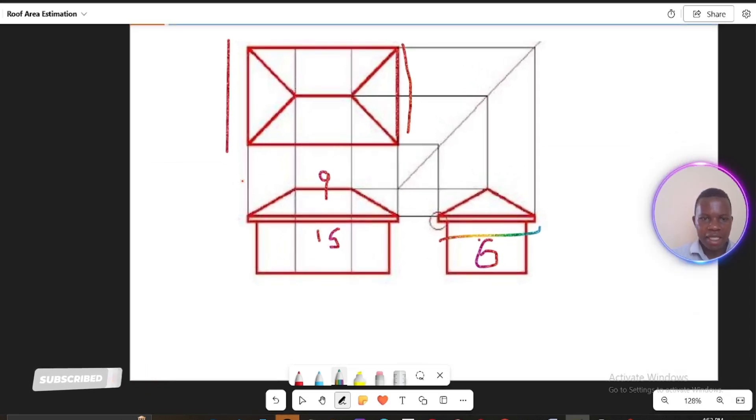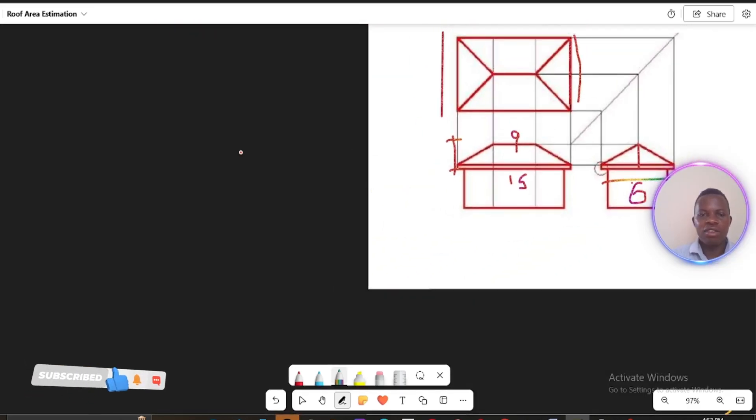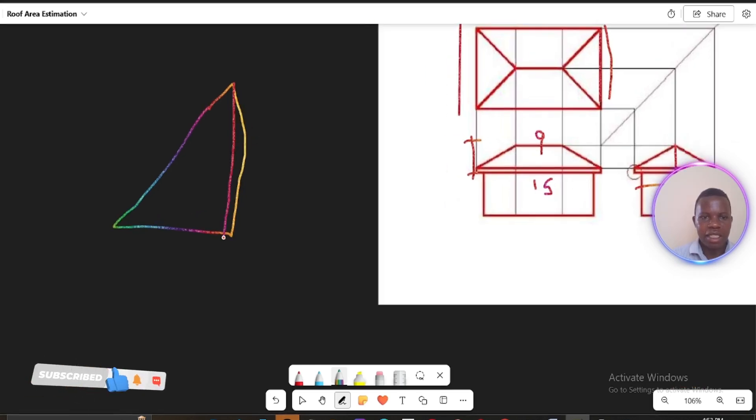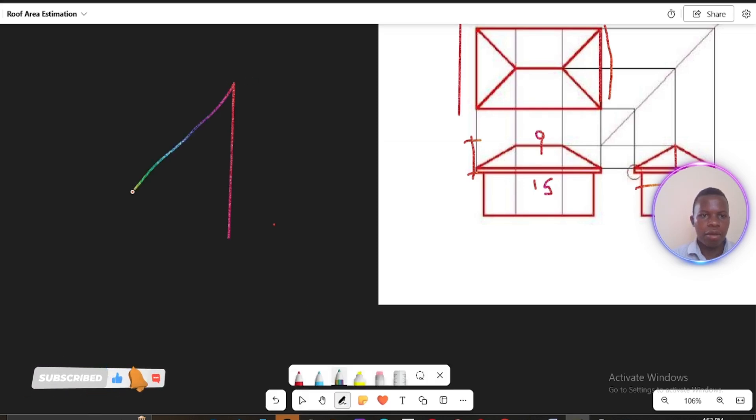Now we're just left with this height here. So how do we calculate the height from the height where we have our lintel up to the peak of our roof here? Then we are going to apply trigonometry formula of calculating the height of our triangle. So if maybe we have a triangle, let me just draw here this triangle. This is just a straight line.